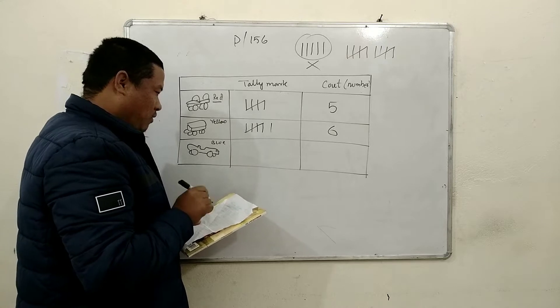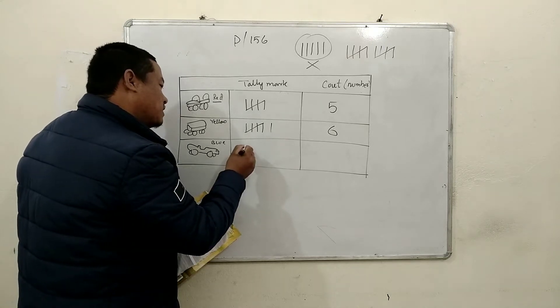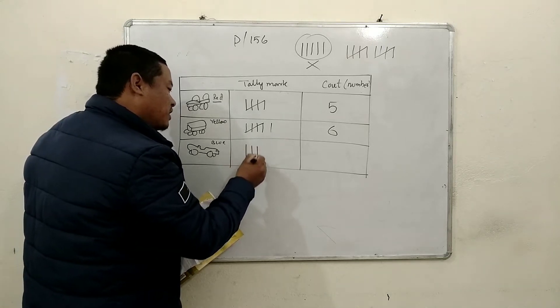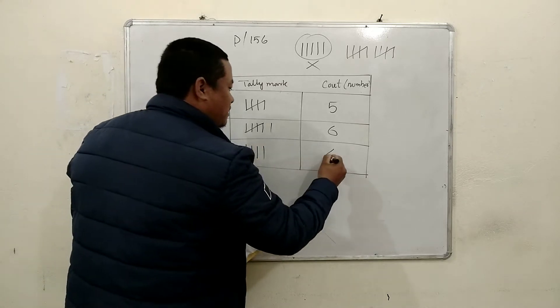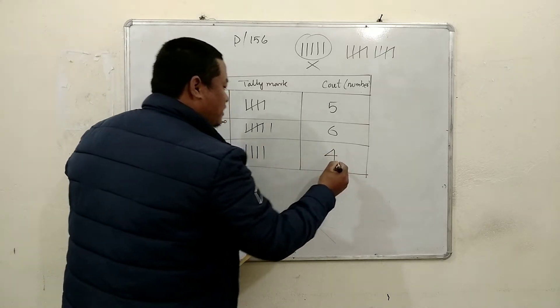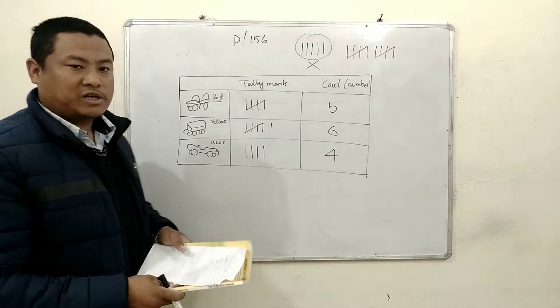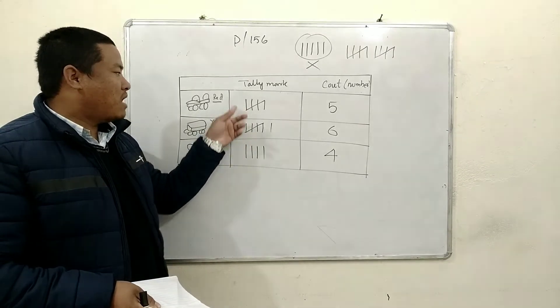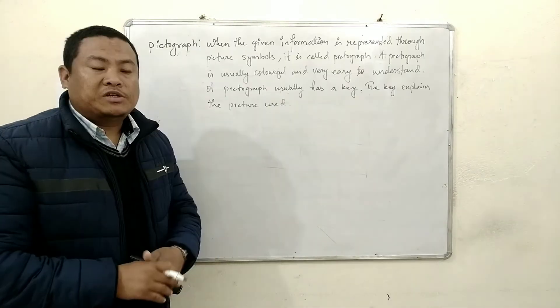Now blue. 1, 2, 3, 4 — four blue cars are there. So in tally marks: 1, 2, 3, 4. And in number, write 4. So children, you have to write tally marks in this form.